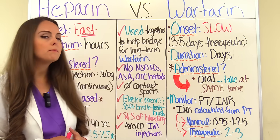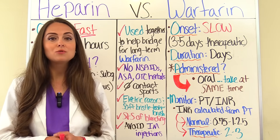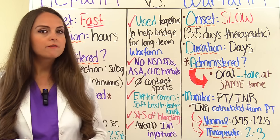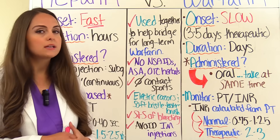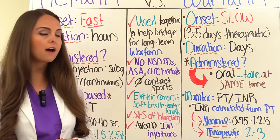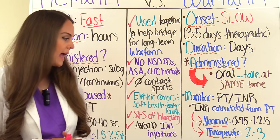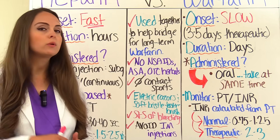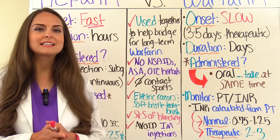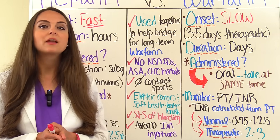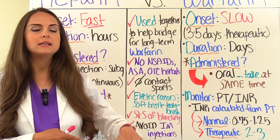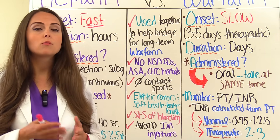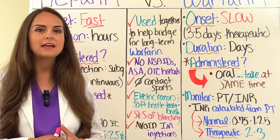With warfarin, we monitor the PT/INR level — especially that INR level. The INR is calculated from the PT level. A normal INR for someone not on warfarin is 0.75 to 1.25. When therapeutic on warfarin, we want the INR between 2 to 3. On test questions: if the INR is less than 2, the patient is not therapeutic and the dose of Coumadin needs to be increased. If the INR is higher than 3, the dose of warfarin needs to be decreased and the patient is at risk for bleeding.